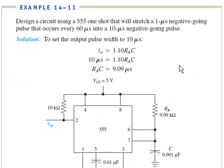So to practice, what we'll do is look at example 14-11. What we're going to use is the 555 one-shot to stretch a 1 microsecond negative-going pulse that occurs every 60 microseconds into a 10 microsecond wide. So basically, we're taking the 1 micro, stretching it out to 10 micro.